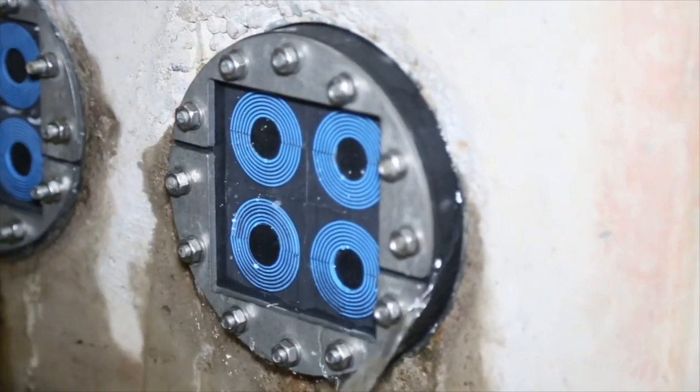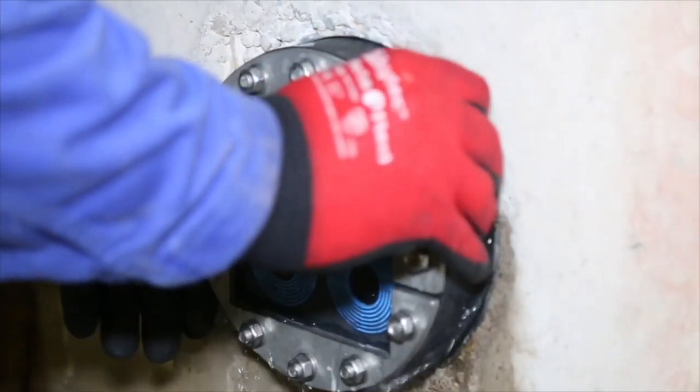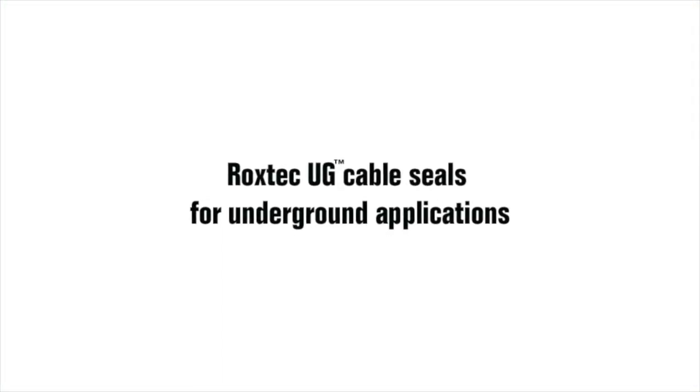Roxtec UG seals are ideal for cables and pipes entering buildings via foundations. The seals keep your site dry and prevent flooding, humidity and rodents from damaging equipment.